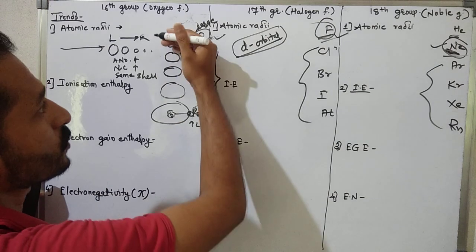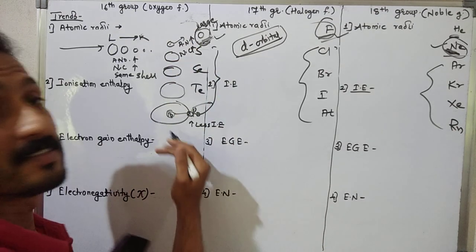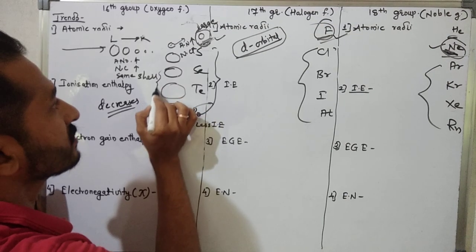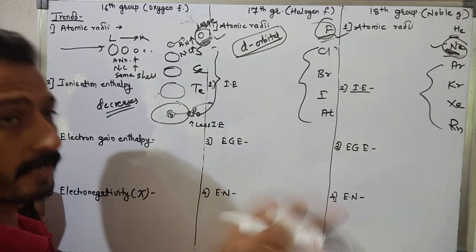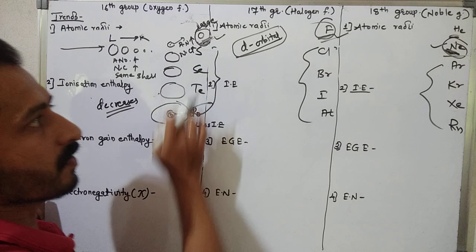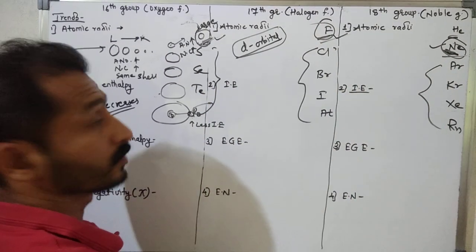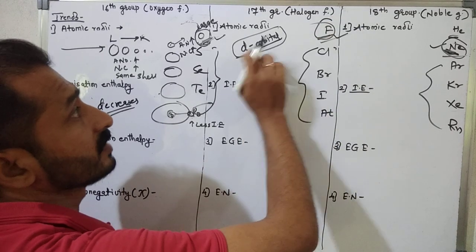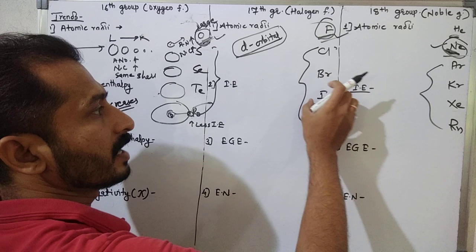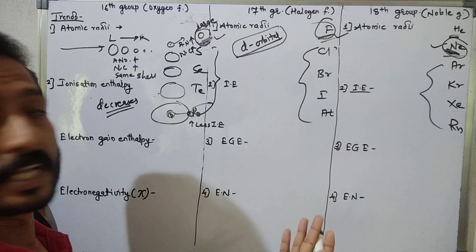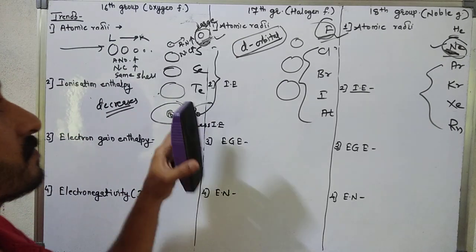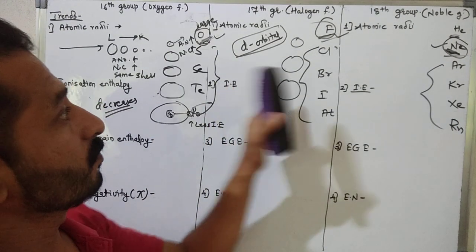Top to bottom, ionization energy decreases overall, though this trend is generally broken at certain points which we shall see in the case of electronegativity also. This overall decrease in ionization energy is also found in the 17th group — fluorine has small size, then chlorine is bigger, bromine bigger still, iodine bigger, astatine the biggest — so size increases and ionization energy overall decreases for all these cases.